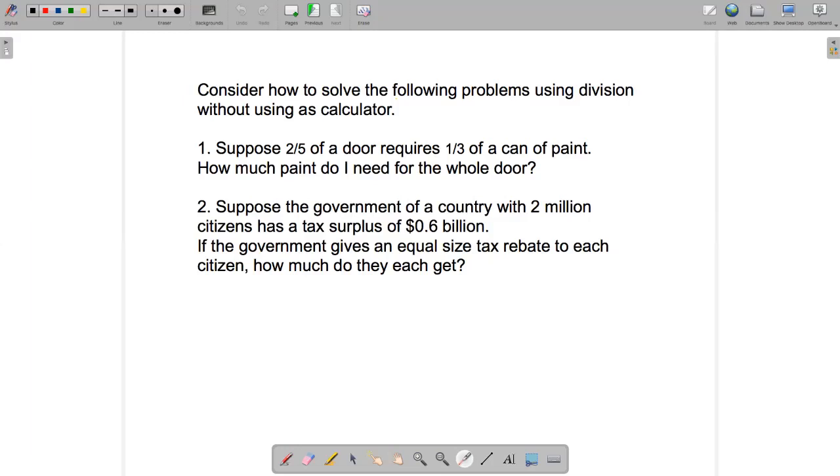And then question two, suppose the government of a country with two million citizens has a tax surplus of $0.6 billion. If the government gives an equal-sized tax rebate to each citizen, how much do they each get?